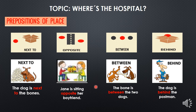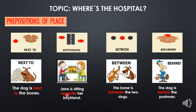Antes de pasar a los siguientes ejercicios del libro, van a repetir después de mí en casita. Pay attention and repeat after me, please. The dog is next to the bones. Jane is sitting opposite her boyfriend. The bone is between the two dogs. The dog is behind the postman.